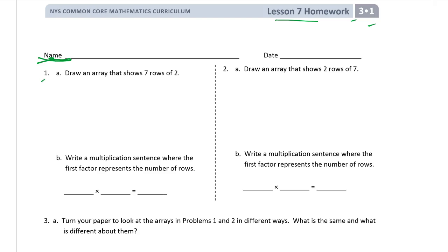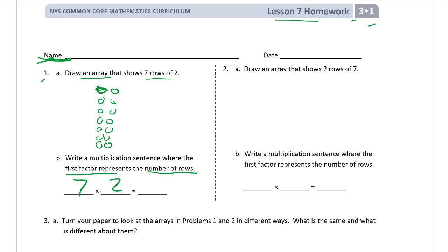Number one: draw an array that shows seven rows of two. We need seven rows of two — one row, two, three, four, five, six, seven rows of two. Write a multiplication sentence where the first factor represents the number of rows: seven rows, that's our first factor, times two in each row equals fourteen. You can count them all or count by twos: two, four, six, eight, ten, twelve, fourteen.